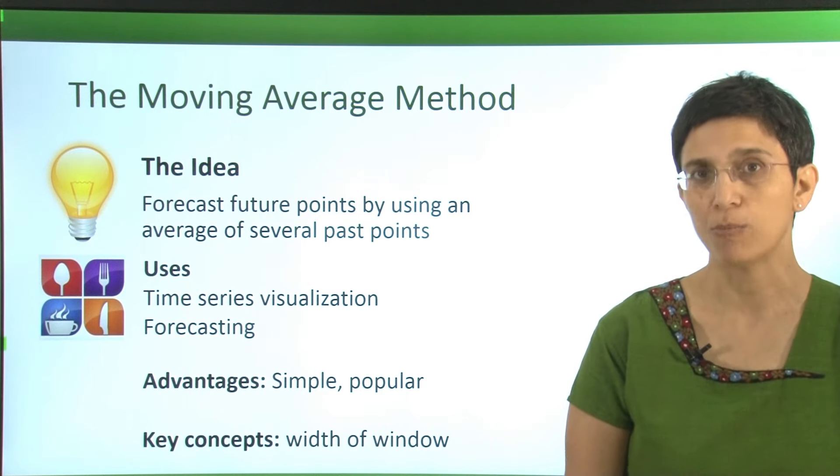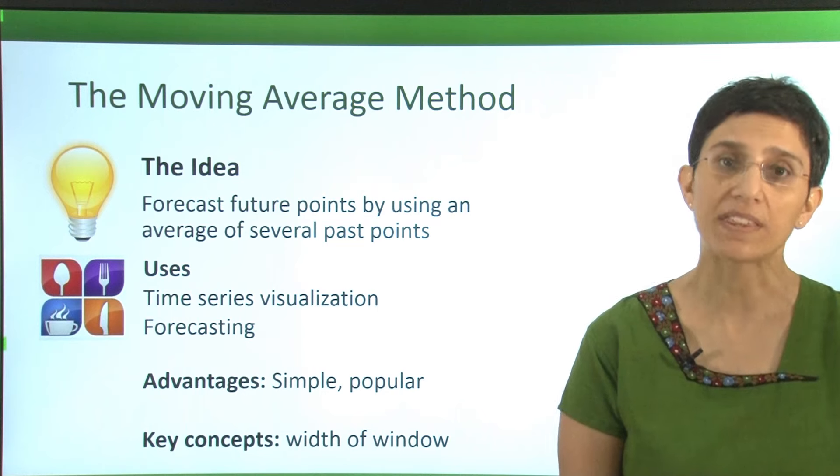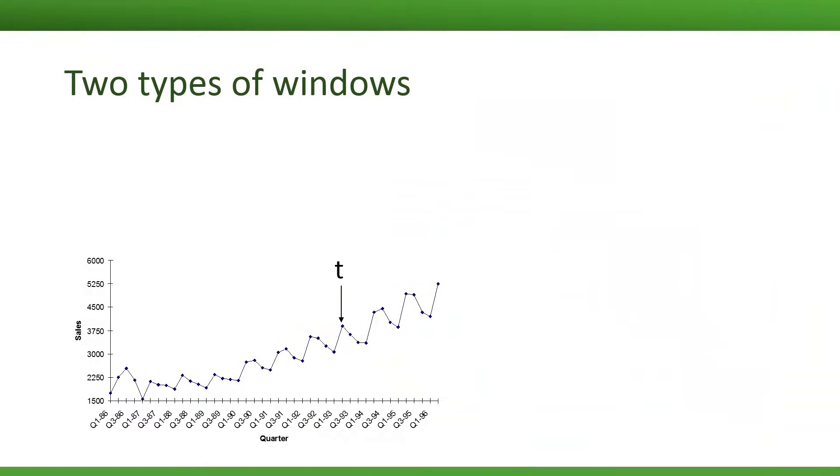The key concept to know about a moving average is what we call the width of a window. We're going to talk about two types of windows, and the difference depends on where we're placing the window relative to the series.